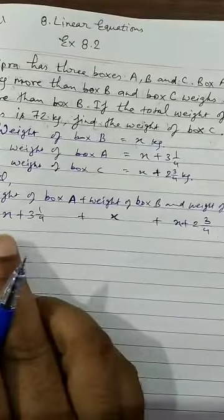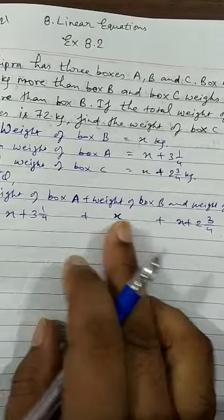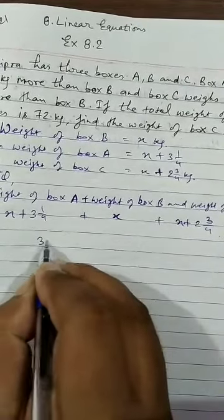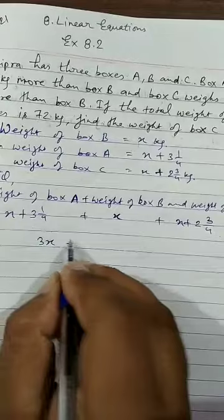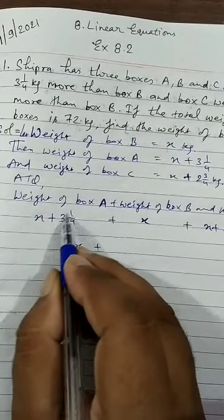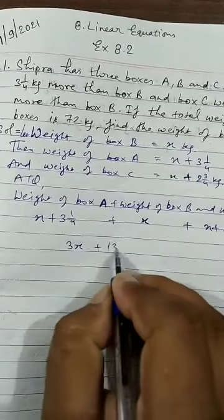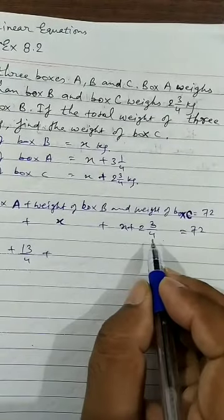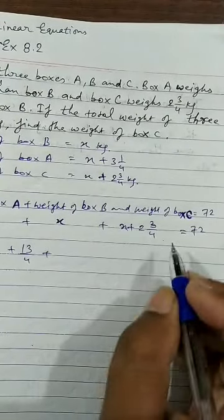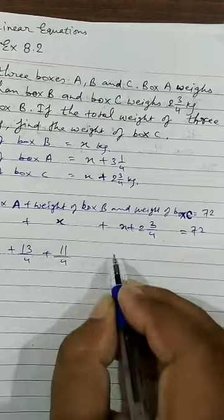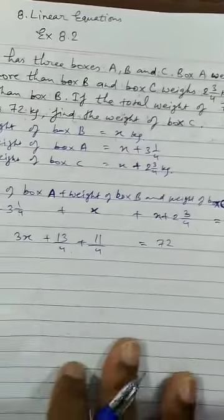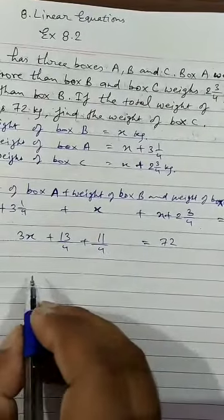So we can see that we have 3 times X. X plus X plus X will give you 3X. 4 times 3 is 12 plus 1 is 13 upon 4 and here 4 times 2 is 8 plus 3 is 11 upon 4 equals to 72. This is the simple equation that we have to solve.